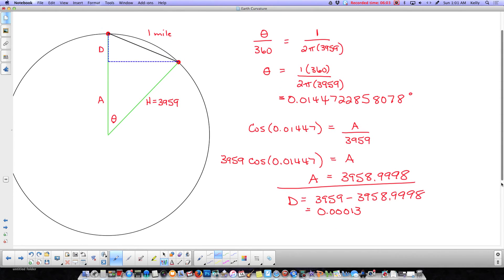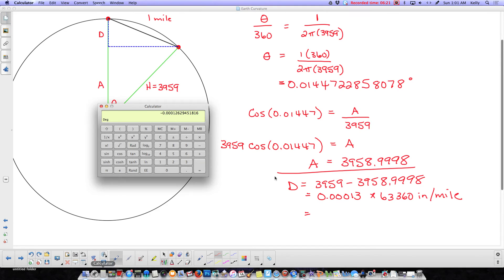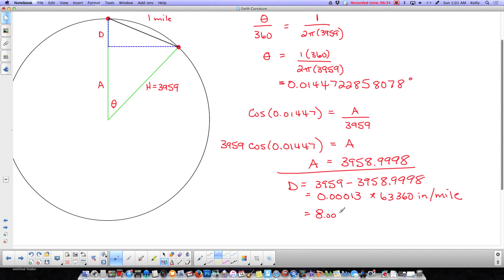Now, of course, that's in miles. If I want to change it to inches, I have to times it by 63360, which is the number of inches in a mile. And that is going to give me times 63360. That's going to give me, well, 8.002, which matches the 8 inches per mile squared.